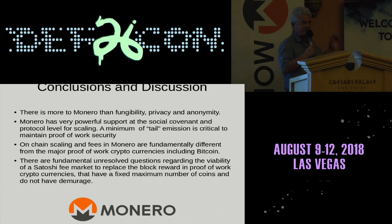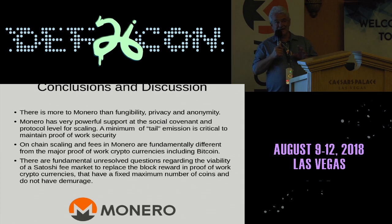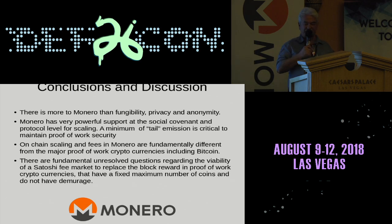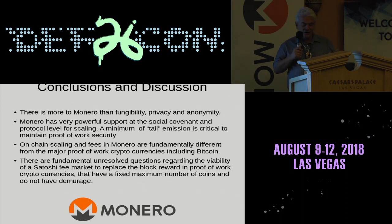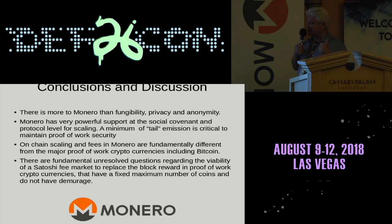Most people are familiar with Monero as a fungibility, privacy, and anonymity coin. I have spent virtually no time on this subject — one of the messages is that there's a lot more to Monero than fungibility, privacy, and anonymity. In fact, Monero has the most successful support at the social covenant level for scaling of any major cryptocurrency. I do not say that lightly. Largely this is due to the combination of the adaptive block-size limit, the CryptoNote penalty, and the minimum tail emission which gives you security. The minimum tail emission is absolutely critical to maintain proof-of-work security.